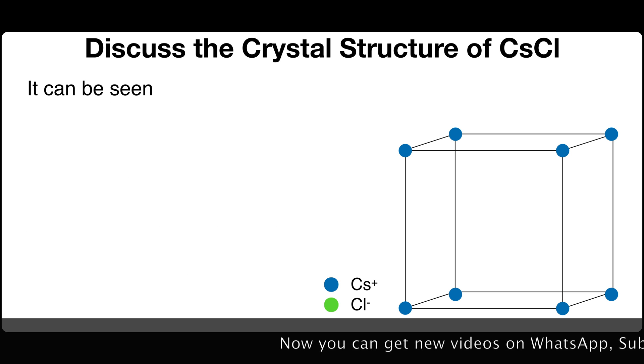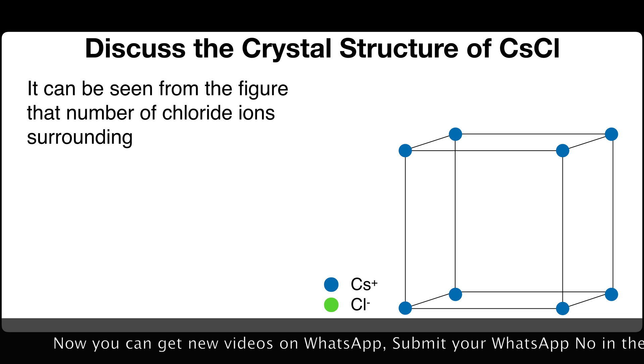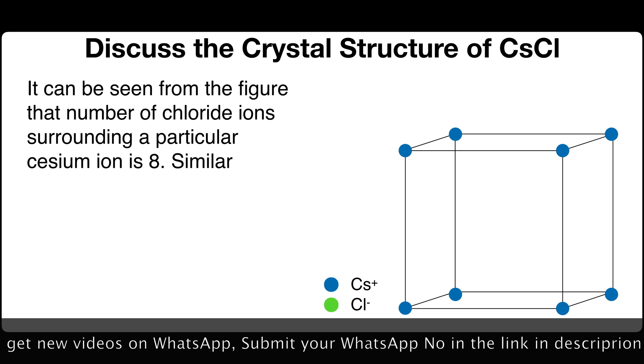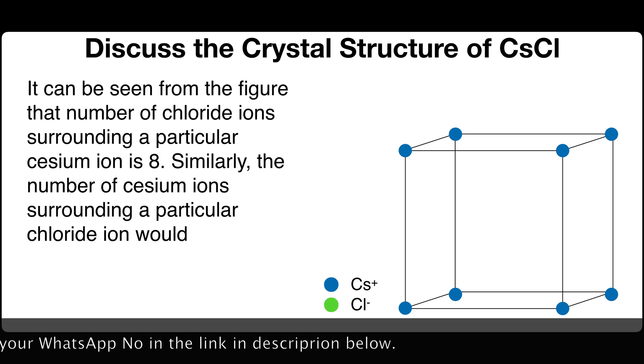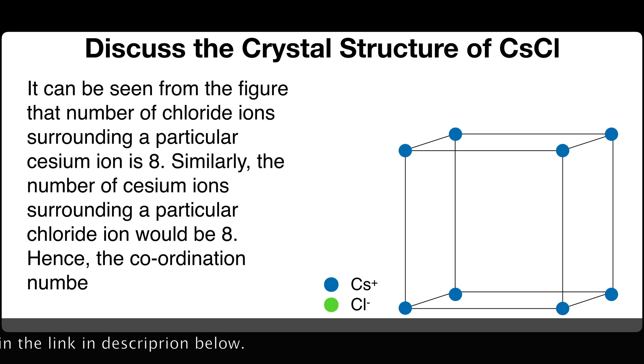It can be seen from the figure that the number of chloride ions surrounding a particular cesium ion is eight. Similarly, the number of cesium ions surrounding a particular chloride ion would be eight. Hence, the coordination number of chloride as well as cesium ion is eight.